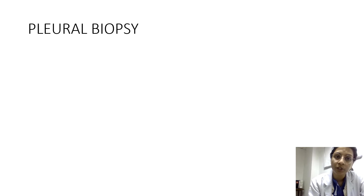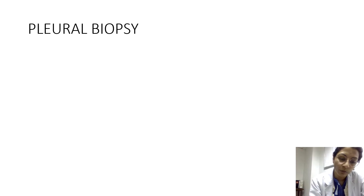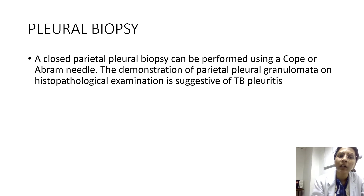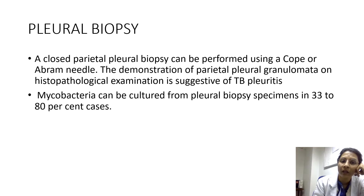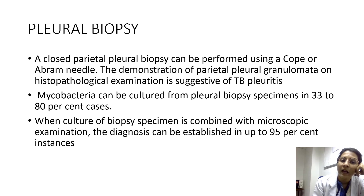The gold standard investigation for TB pleural effusion is a pleural biopsy — a piece of parietal pleura obtained under vision via thoracoscopic guided biopsy, or blindly using the Abraham or Pope's needle. If immunohistochemistry demonstrates a parietal pleural granuloma, it is highly suggestive of TB pleural effusion. Mycobacteria can be cultured from pleural biopsy specimens in 33–80% of cases, and combined with microscopic examination, diagnosis can be established in up to 95% of instances.